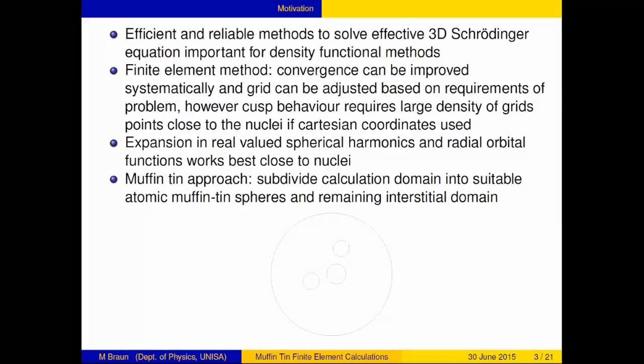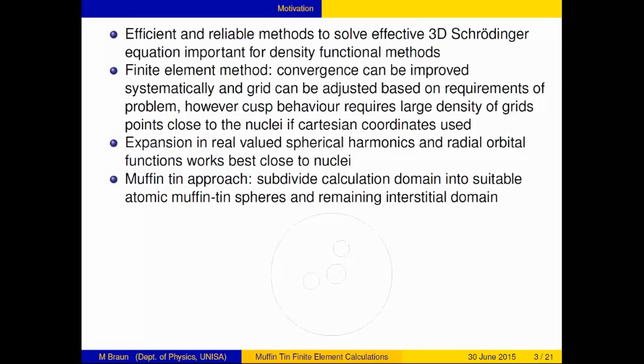Therefore, classical atomic physics tells you, if you are close to a nucleus, you should rather use spherical coordinates and radial orbital functions with spherical harmonics. The muffin tin approach deals, as the word already says, with subdividing your total domain into spheres for the atoms and the interstitial domain.